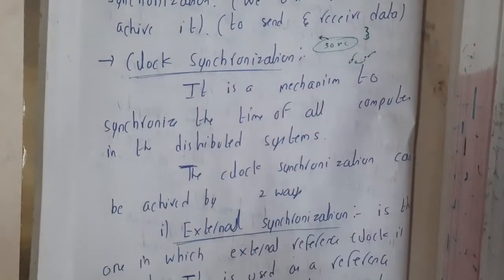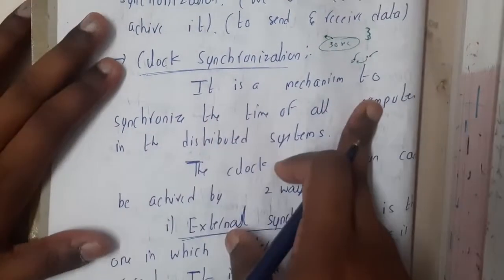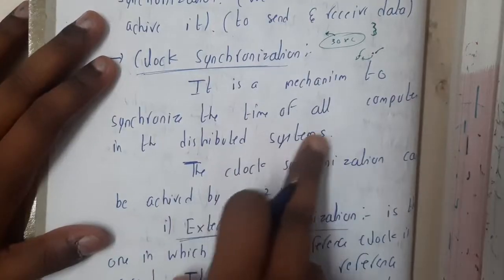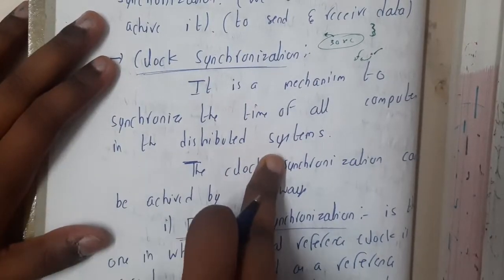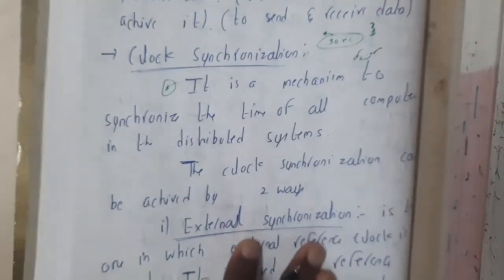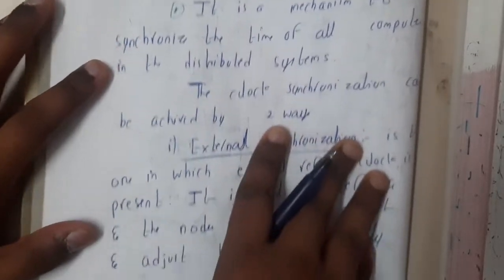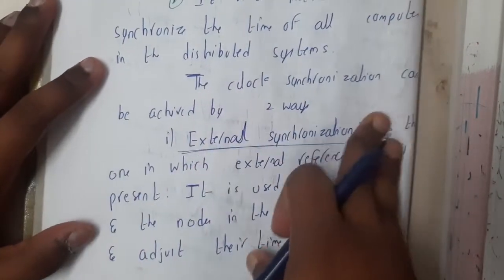The first type is clock synchronization. It is a mechanism to synchronize the time of all computers in a distributed system. Basically, here you will be using the clock, like a 24-hour clock time, which we will be using to synchronize things.